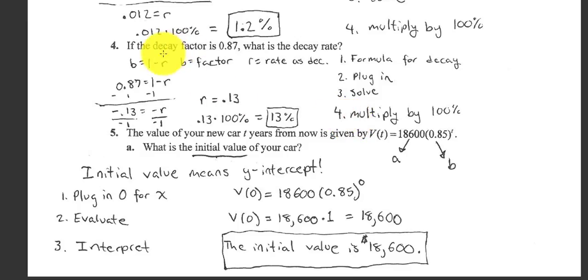Number 4. They give us the decay factor. So we know what the B is. We have to find the R. Again, you see the word decay. So we use 1 minus R. Growth, we used 1 plus R. We substitute 0.87 for B and solve for R. You end up with 13%.